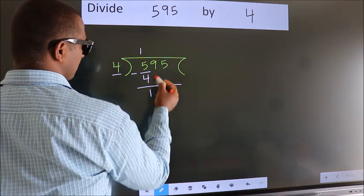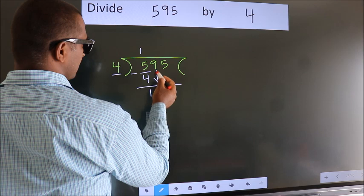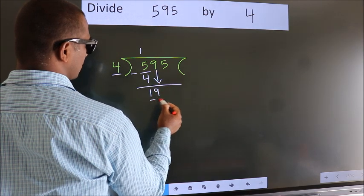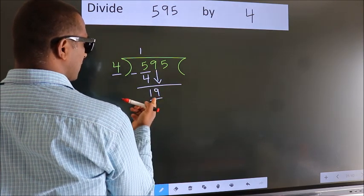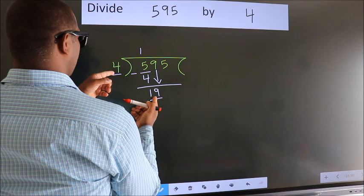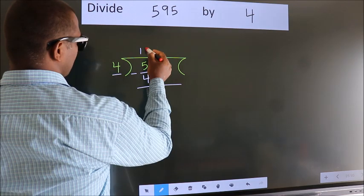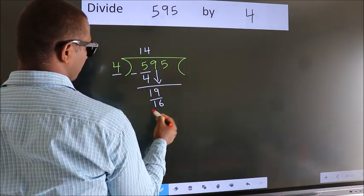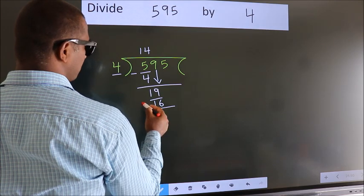After this, bring down the beside number. So 9 down, making 19. A number close to 19 in the 4 table is 4 fours, 16. Now we subtract.